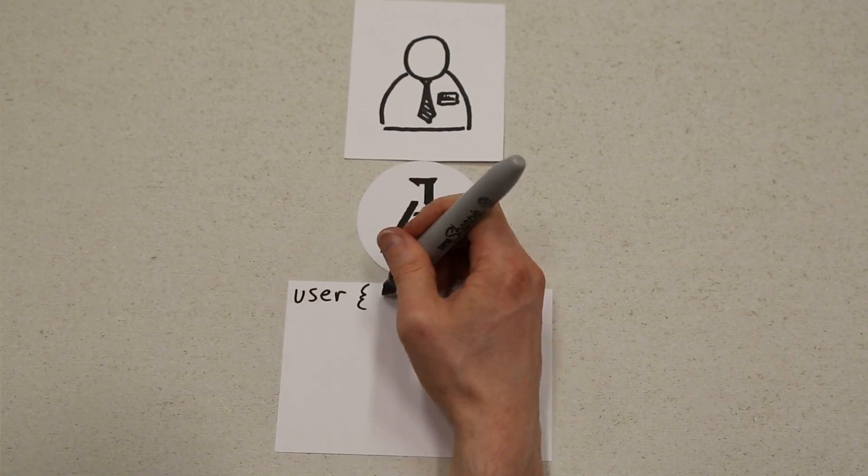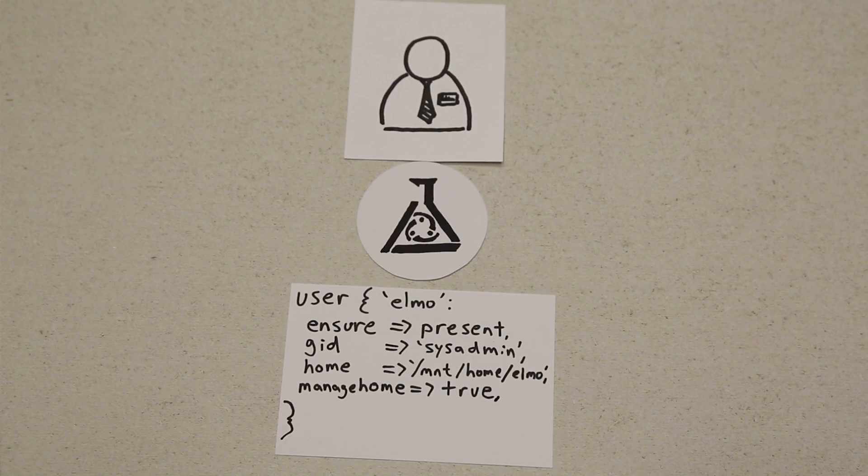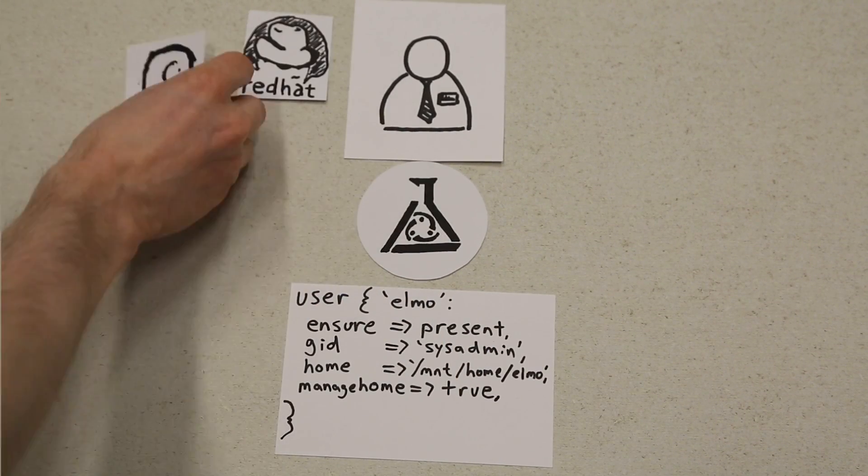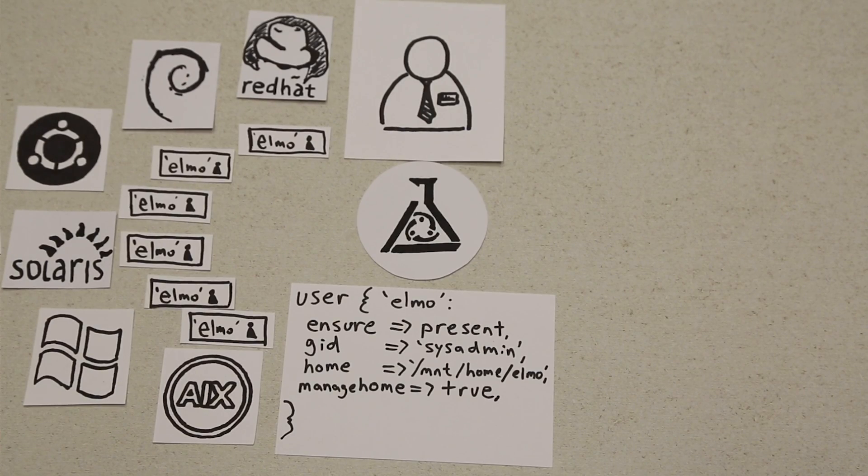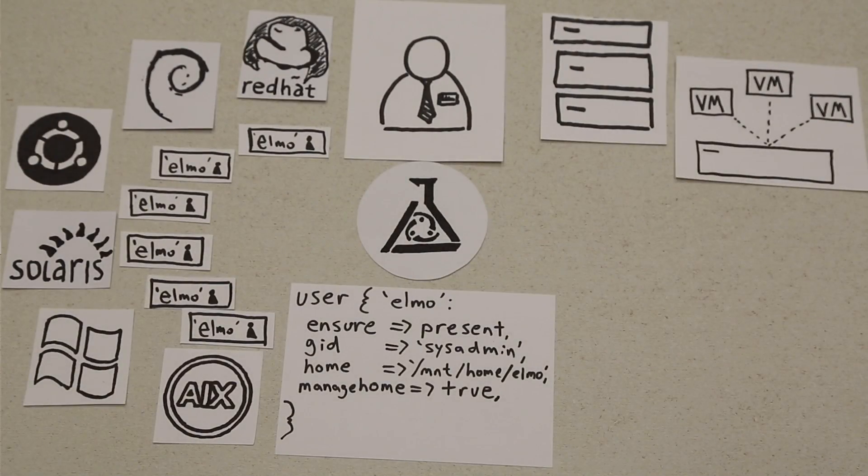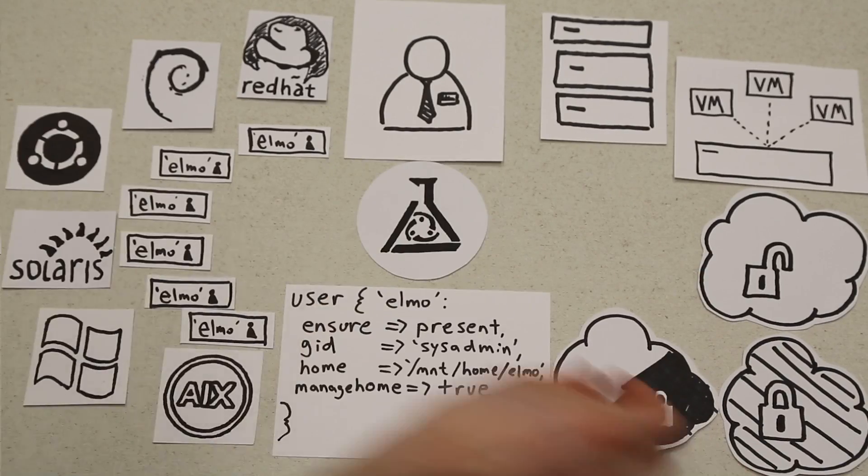Joe can now manage his resources by writing it once in Puppet's simple configuration language, which allows him to use it in many different operating systems. It's also portable to different deployment environments, including physical or virtual servers, or in the public, private, or hybrid cloud.